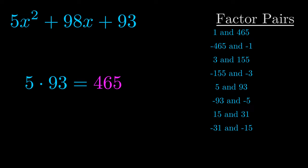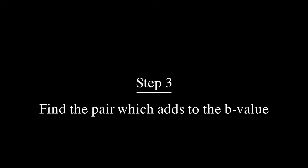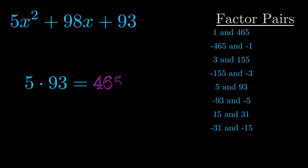Now once you have these factor pairs the goal is to find which of these pairs adds to the b value. The b value is the coefficient on the x term. That's the middle term, the one that we haven't done anything with yet. And really this is the only factor pair that we need.